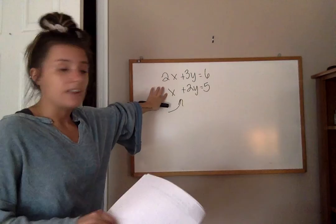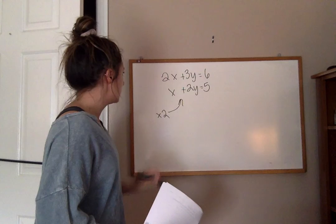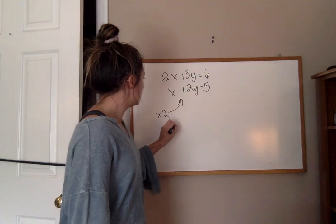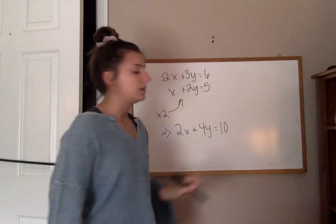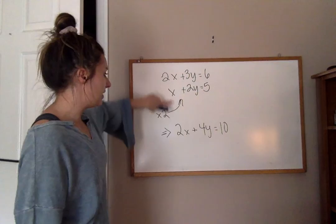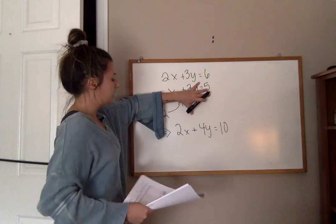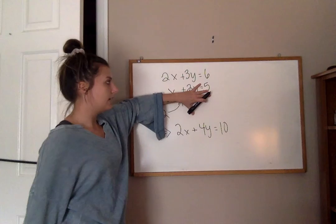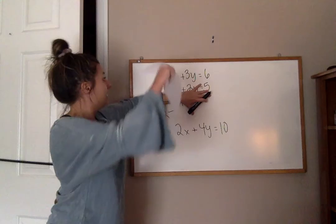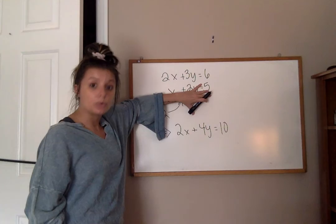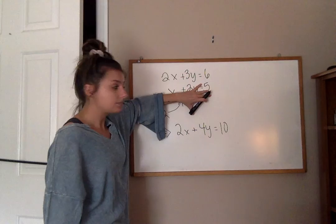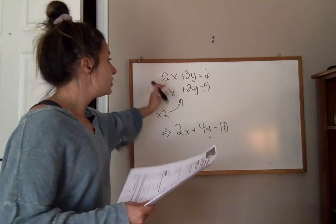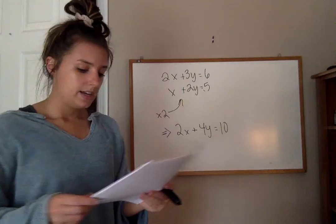If I multiply the second equation by 2, let's see what happens. I then have 2x plus 4y equals 10 — make sure you multiply every single part of the equation. Now I have the original first equation: 2x plus 3y equals 6, and my new second equation: 2x plus 4y equals 10. Now I can use elimination method, because I can subtract 2x minus 2x, which will eliminate the x's. Then I can solve for y and get my y coordinate.